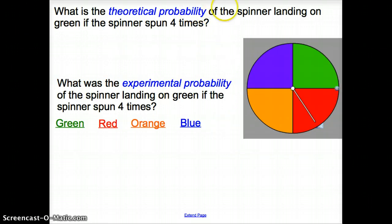So what is theoretical probability of the spinner landing on green if it is spun four times? Now, since it is theoretical probability, we're actually not going to spin the spinner, but we're going to use the theory or theoretical probability. Well, what would be the probability of this spinner landing on green? Well, there is four evenly shaped areas, and one of them is green. So you have 1 out of 4, and you would take it times the number of times you're spinning it. So 1 fourth times 4 is 1. So using theoretical probability, this spinner would land on green once.